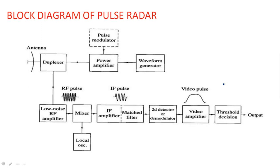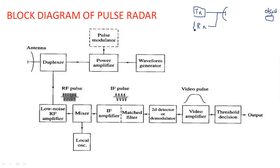This is the complete block diagram of the pulse radar system. As I told you in the basic principle of a radar system, the main blocks involved are a transmitting section, a receiving section, and an antenna. So we need a transmitter, a receiver, and an antenna. The transmitter may be different depending upon the type of signal being radiated into free space to detect the object. In the pulse radar system, a pulse modulated signal is being transmitted.